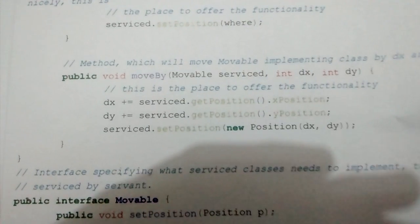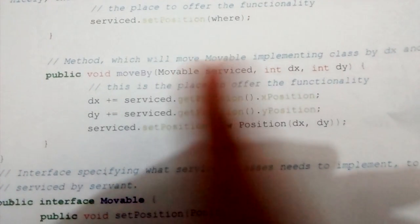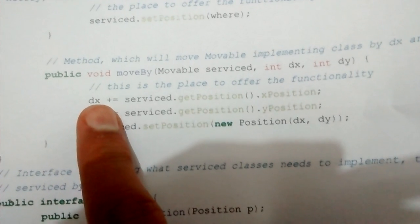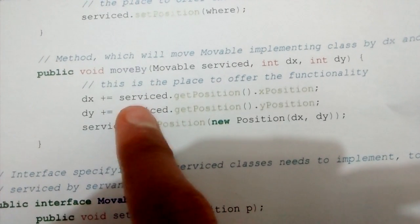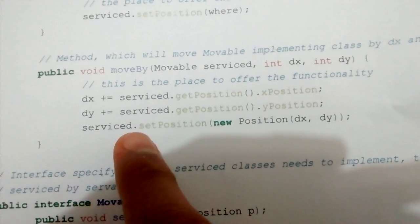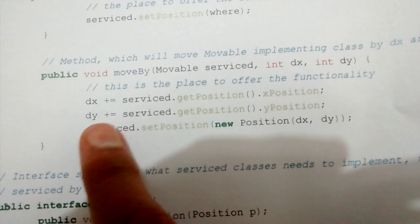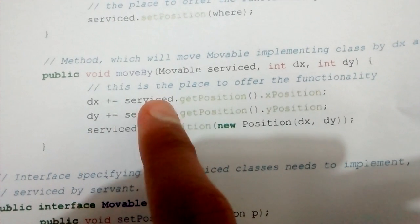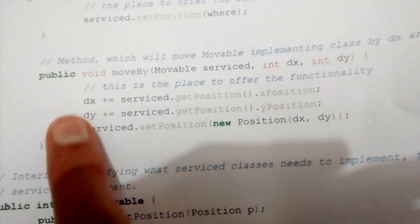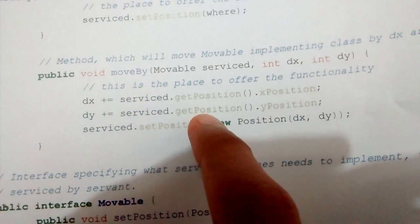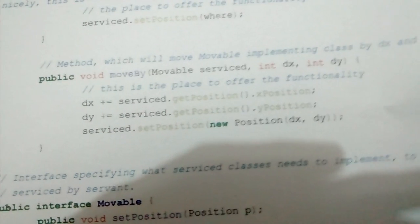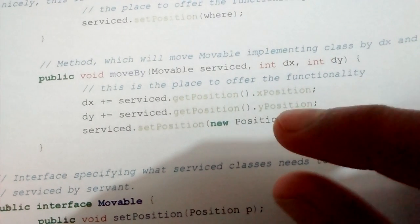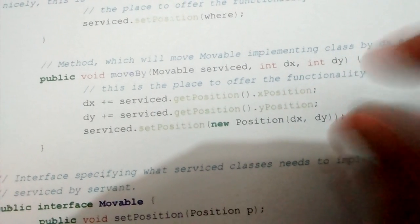Similarly, moveBy moves the object in the x direction by dx and in the y direction by dy. Whatever its x coordinate is, I add dx to it — serviced.getPosition() gives me the x coordinate, I add dx. And dy I add to its y coordinate. So the final result is the original x coordinate plus dx, and the original y coordinate plus dy.